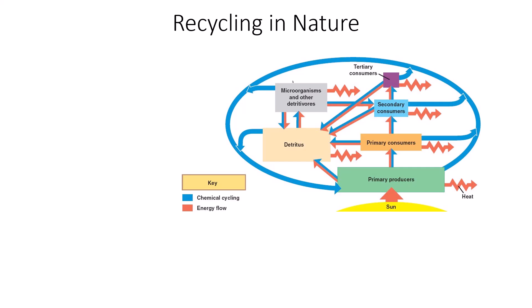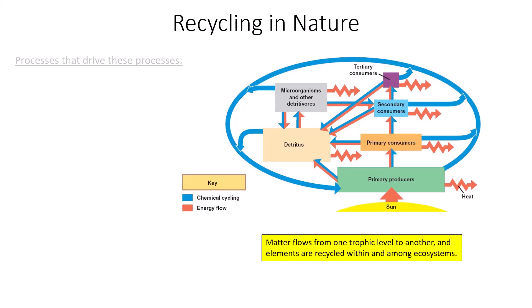It's one of the laws of thermodynamics. Matter cannot be created nor destroyed, so it will continue to change forms and can continue to be broken down and build up, but it will in fact always recycle and end up back at the primary producers. Matter flows from one trophic level to another and elements are recycled within and among ecosystems. You will never destroy or lose matter. It is always recycled.